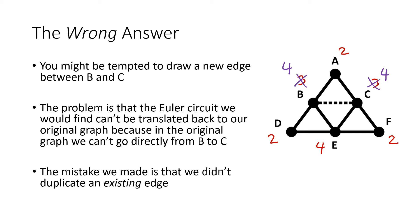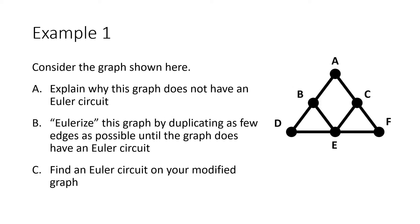We can't just create a brand new edge out of nowhere. If we're going to Eulerize, we must duplicate an existing edge, because duplicating an existing edge corresponds to retracing that edge when we go back to the original graph. So we've got to try again. Our degrees are 2, 3, 3, 2, 4, and 2, and we need to duplicate edges until all those numbers are even.